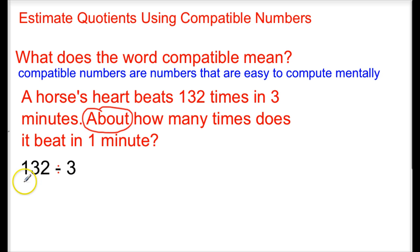So we started working on this problem, 132 divided by 3. The first thing that we tried was to estimate around 132 to 130, and then divide that by 3. So we were thinking to ourselves, what times 3 is going to give us 13? We decided that number would be 4.